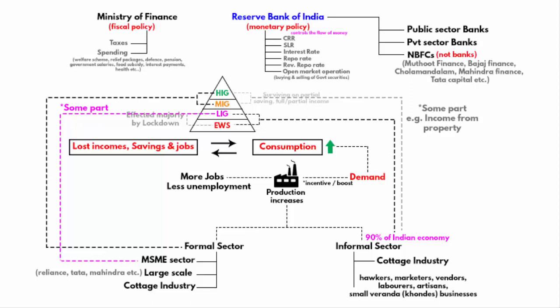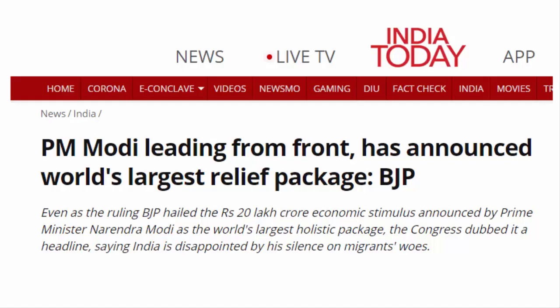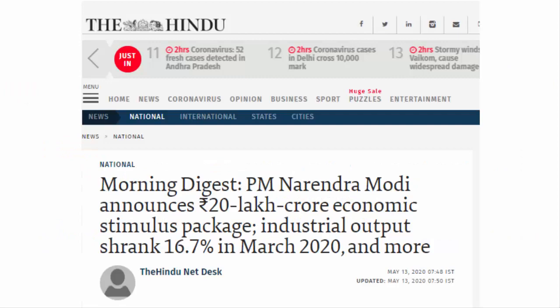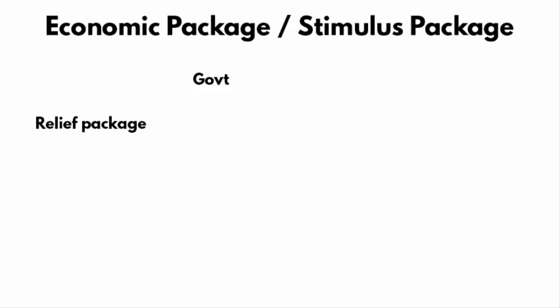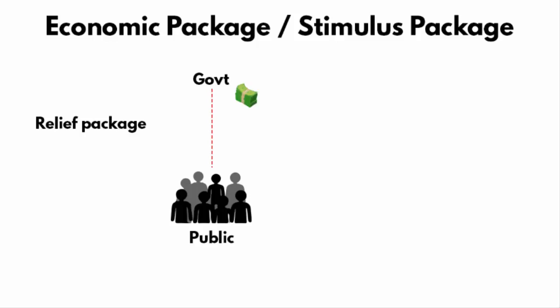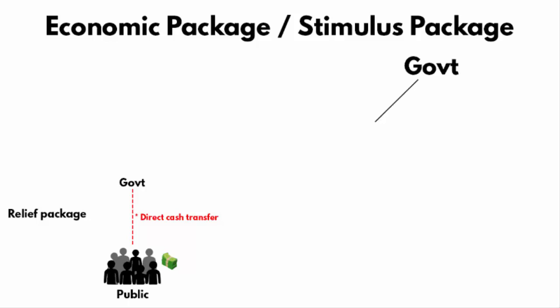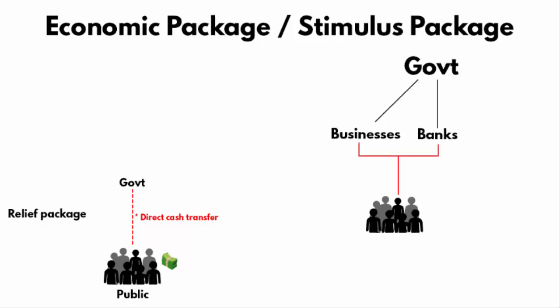Now let's look at the highlights of the government's Atmanirbhar Bharat Abhiyan package. On May 13th, when Prime Minister Modi announced the 20 lakh crore economic package, I want you to pay attention to the words 'economic package' — it is not a relief package. A relief package means giving direct financial assistance to people, for example, direct cash transfer. But an economic package is more vast and complicated — the government is not putting its own tax money. Instead, it is changing policies and systems to encourage the financial system to come back on track.